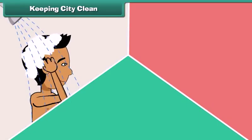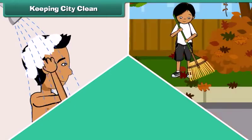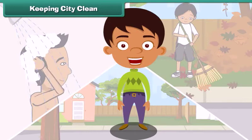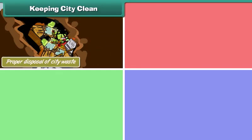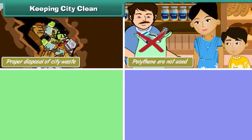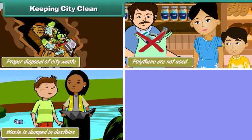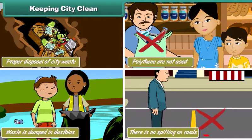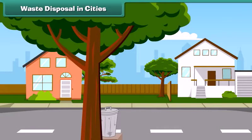It is not enough to maintain personal, neighborhood, and community hygiene. It is also our responsibility to keep our city clean. We can keep our city clean by ensuring proper disposal of city waste, not using non-biodegradable substances like polythene, dumping waste in dustbins, and avoiding spitting on roads.